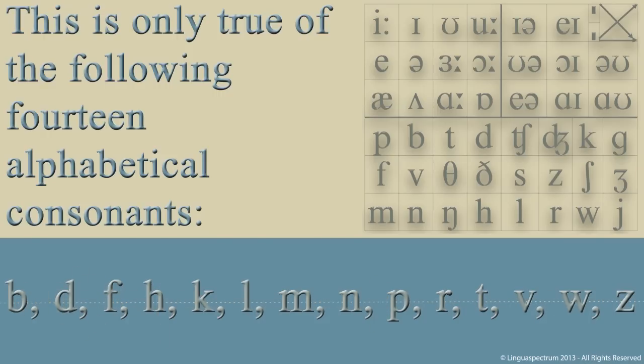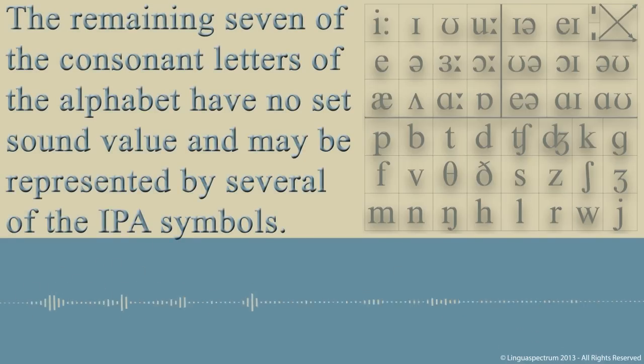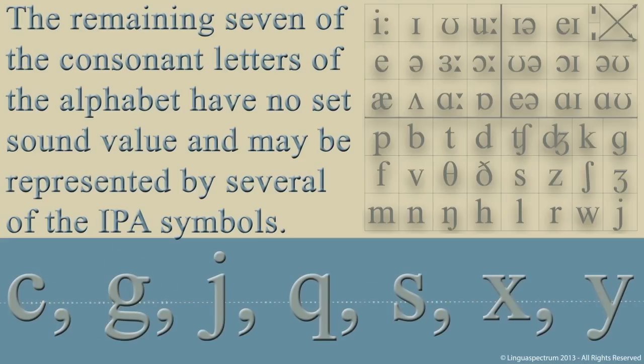The remaining seven of the consonant letters of the alphabet have no set sound value and may be represented by several of the IPA symbols: C, G, J, Q, S, X, Y.